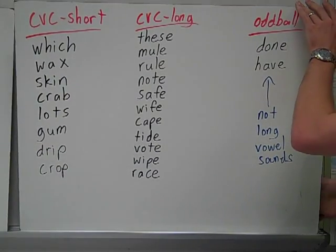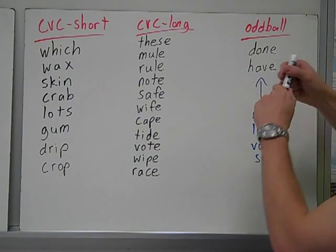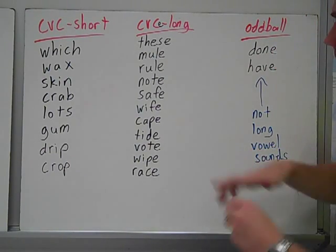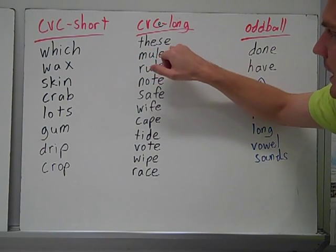Now, this is CVCE. And I forgot to put the e there. There we go. C, V, C, E, long. So you have your vowel, consonant on either side with an e at the end.